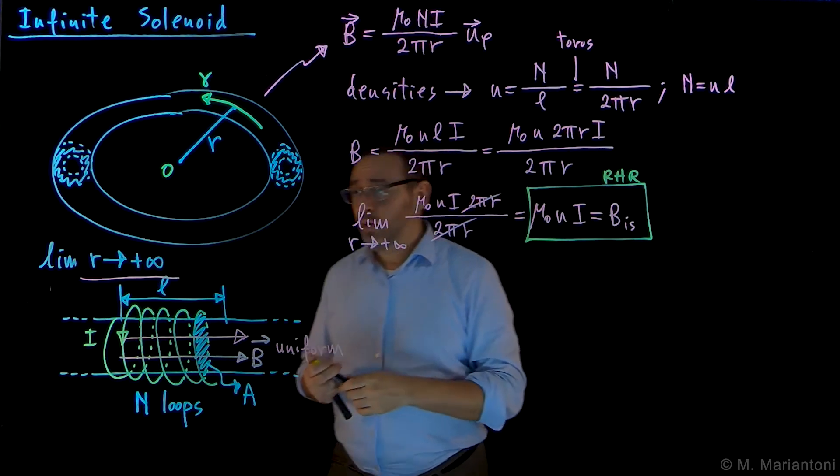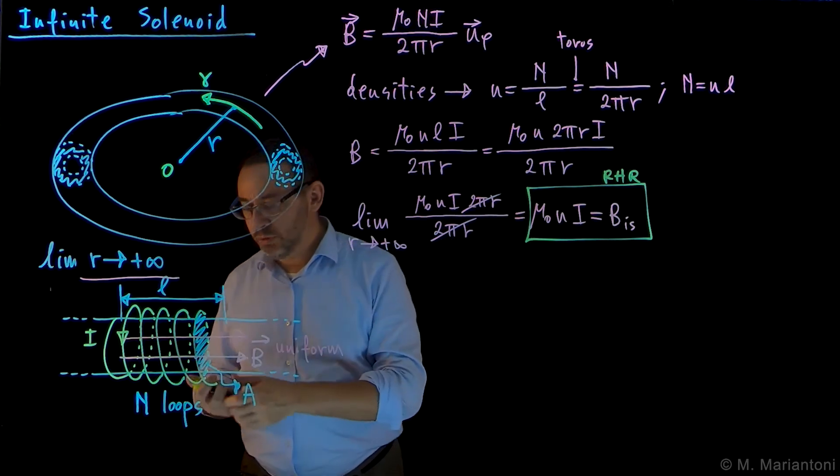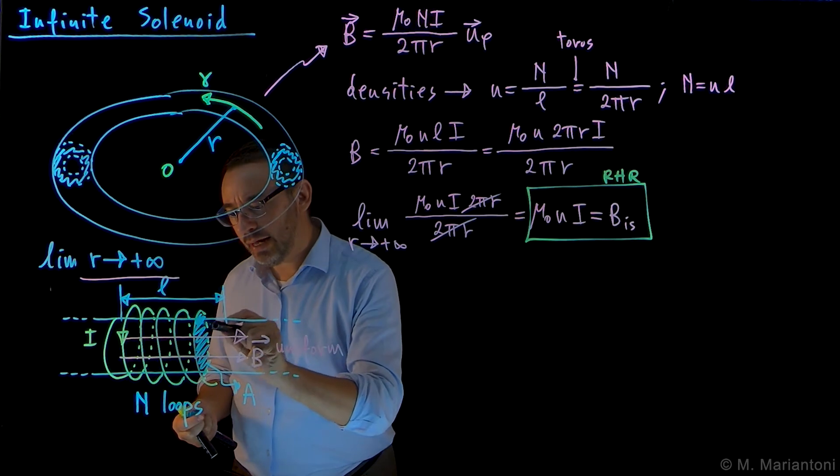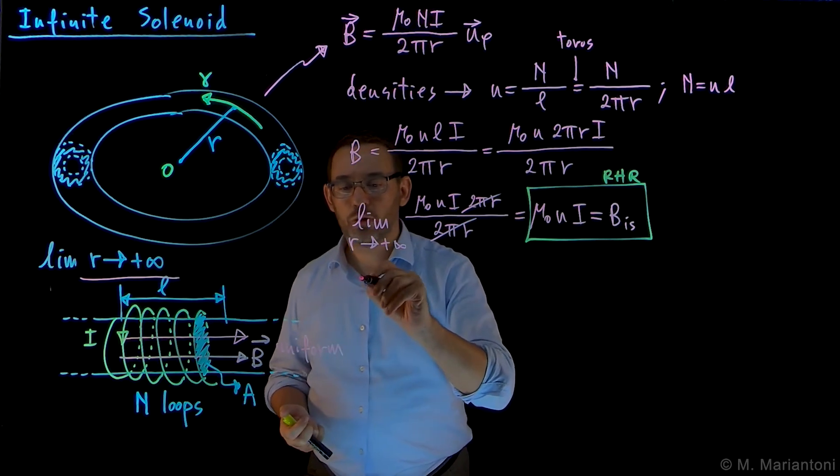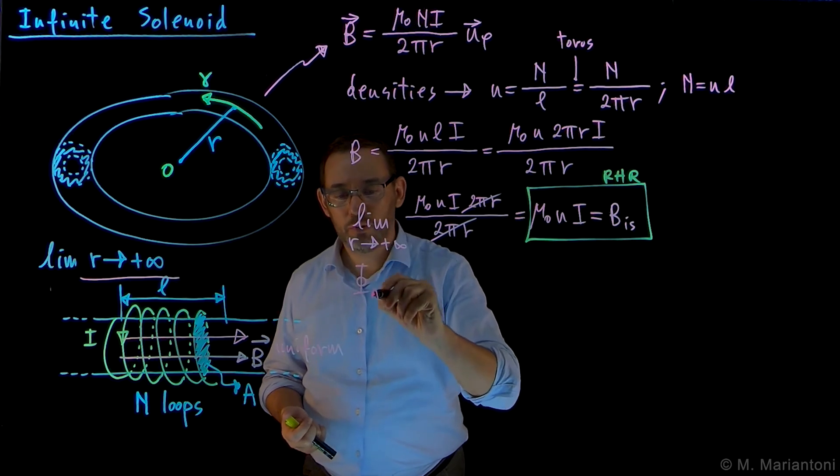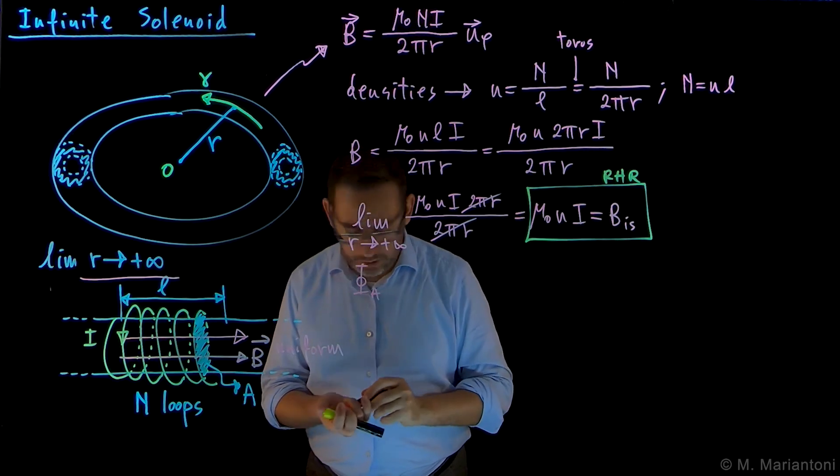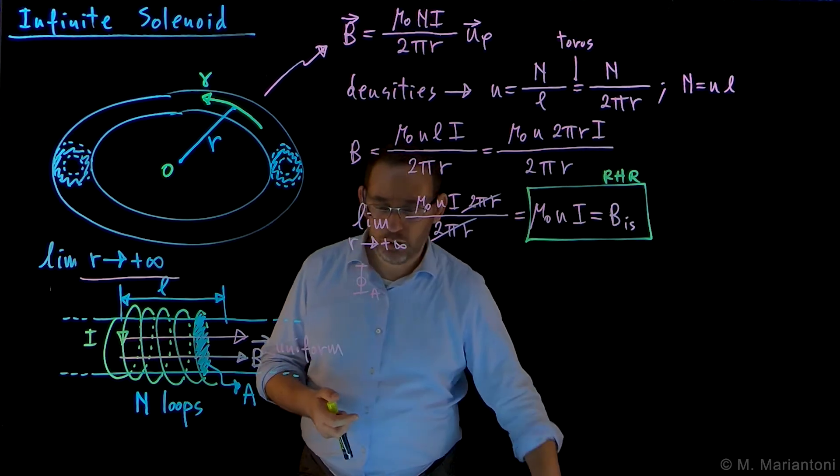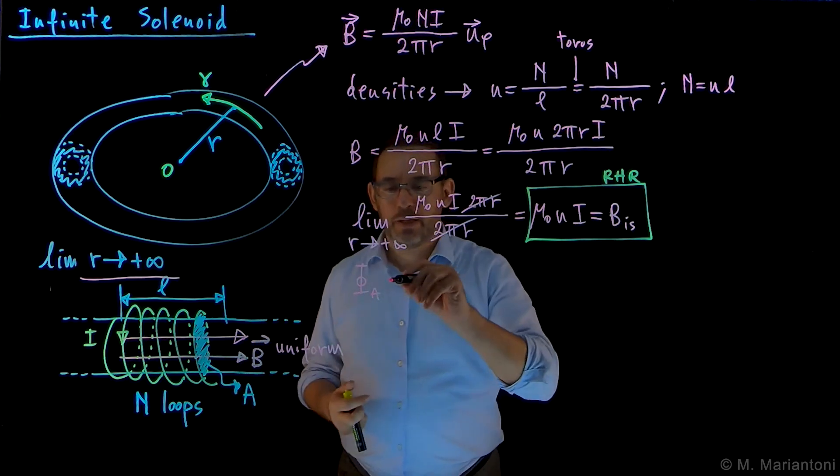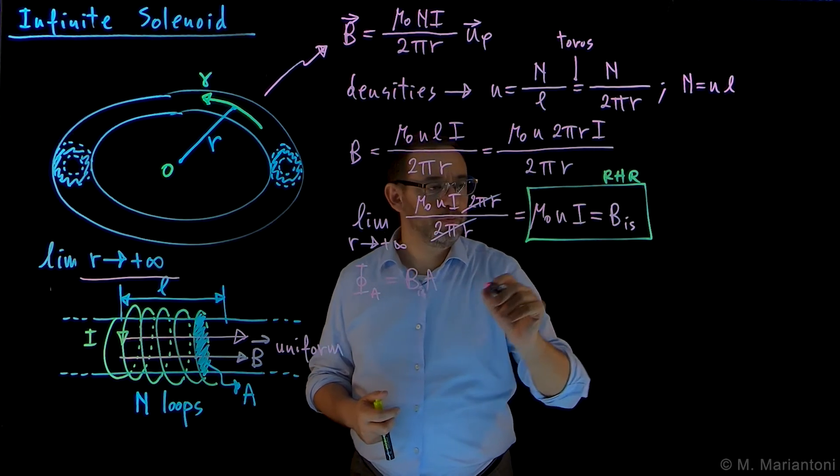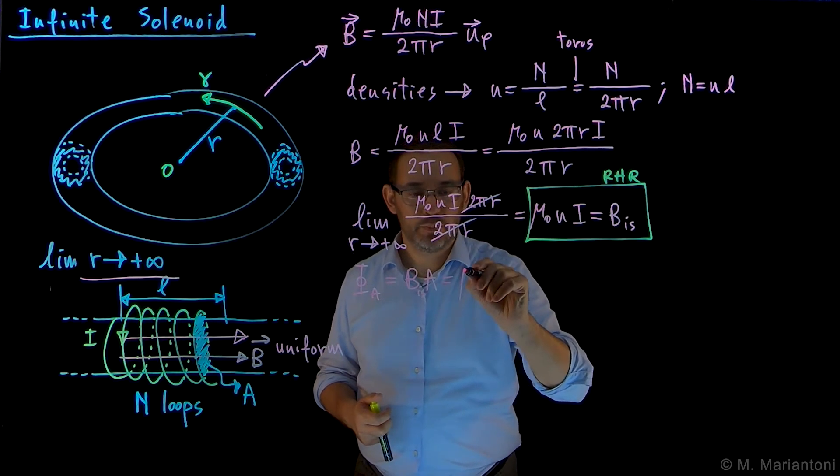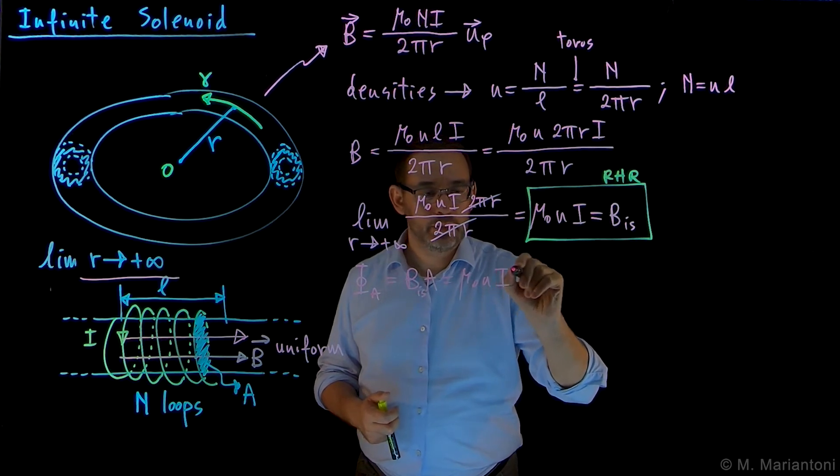So now that we know what the field is, we want to compute the flux over one of these areas here. So such a flux, let's call it A, and so this flux is nothing but B times A, which is mu_0 n I times A.